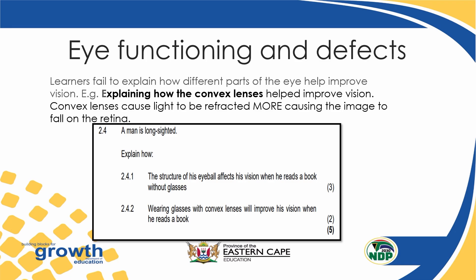For example, looking at this question — a man is long-sighted. The question asks: explain how the structure of the eyeball affects his vision when he reads a book without glasses. First, we need to understand what happens when a person is long-sighted. The eyeball is too rounded, and because it is too rounded, the image cannot be focused on the retina. The image is focused behind the retina, which causes that image to be blurred. The learner needs to explain that because the eyeball is too rounded, the image is unable to focus on the retina.